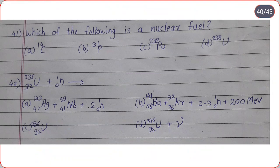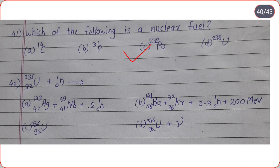Which of the following is a nuclear fuel? The reaction uranium-92-235 plus neutron is a nuclear fission reaction, therefore correct option is option B.